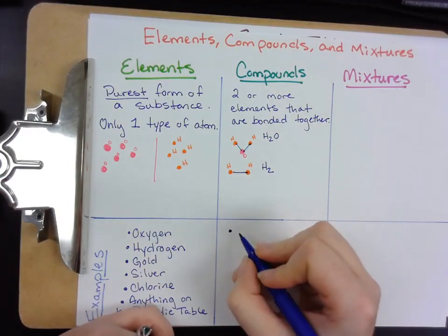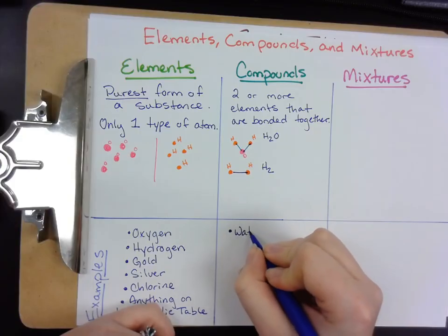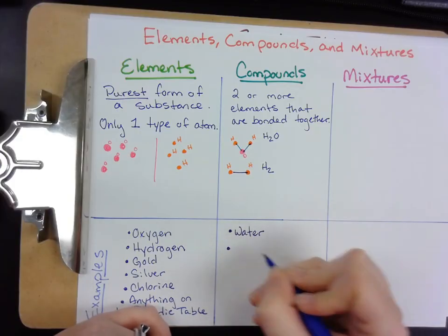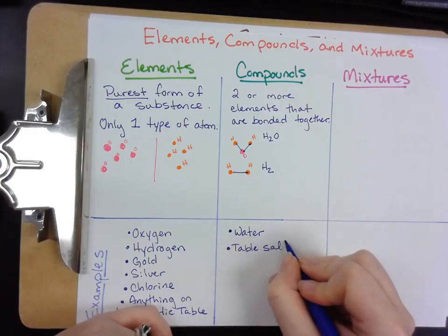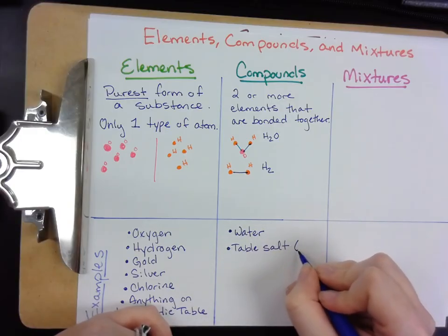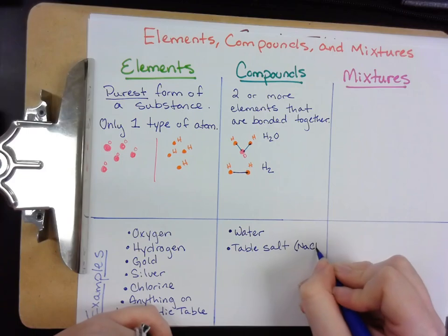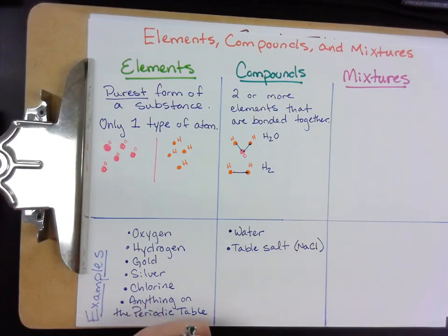So some examples of compounds would be things like water, salt. Salt is another example of a compound. So salt is sodium and chlorine bonded together, NaCl.